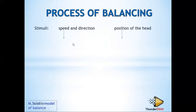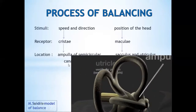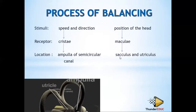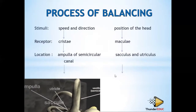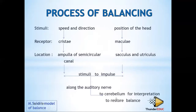Now write this down: a change in the speed and direction of the head stimulates the cristae found in the ampulla of the semicircular canal. A change in the position of the head stimulates the maculae found in the saccule and utricle. The stimuli are converted into impulses, and the impulses are sent to the brain along the auditory nerve for interpretation.